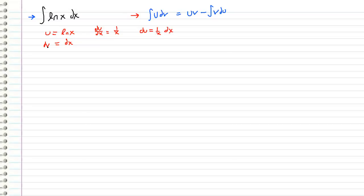And we can do the same thing with dv, but this time we integrate it. So we can just integrate both sides and we get v is equal to x. So we have u is equal to natural log of x, v is equal to x, dv is equal to dx, and du is equal to 1 over x times dx.